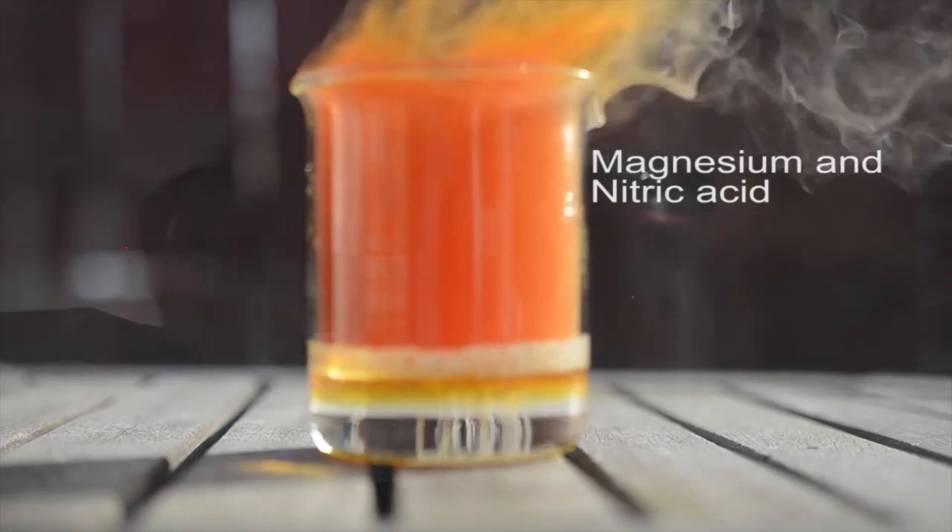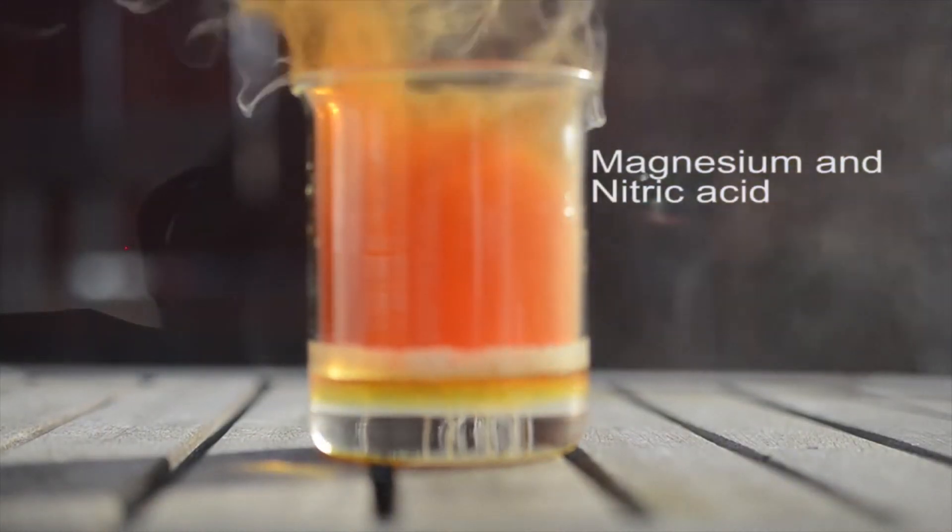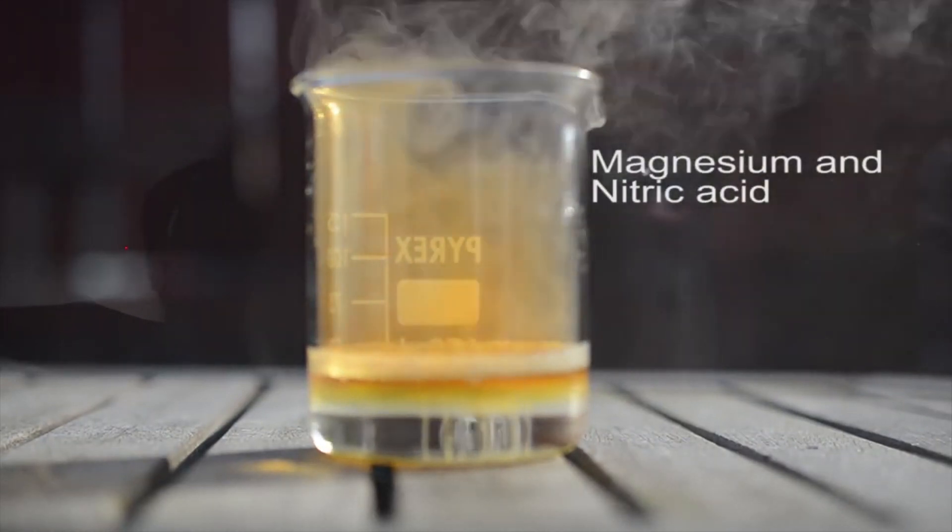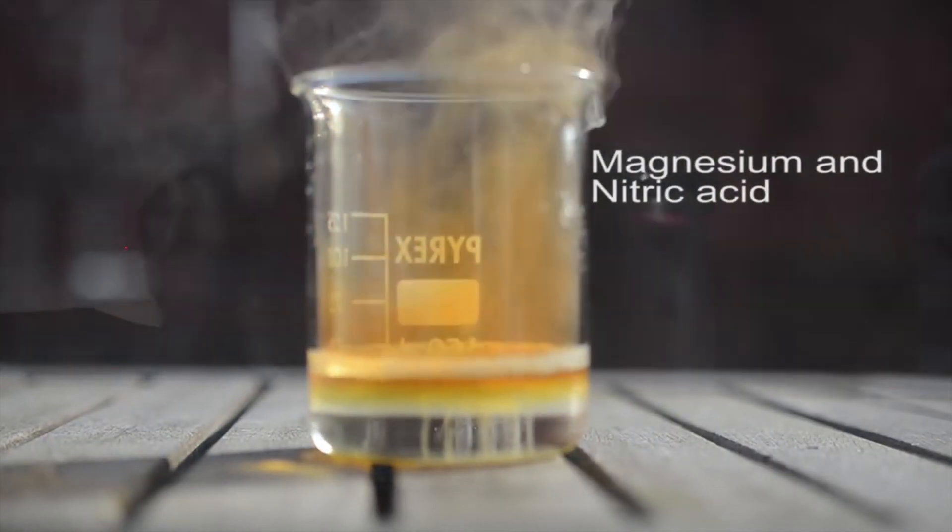Magnesium reacts with concentrated nitric acid producing nitrogen dioxide, magnesium nitrate and water. The elevated reddish brown gas is nitrogen dioxide.